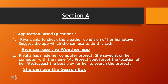Rhea wants to check the weather condition of her home town — suggest the app she can use. The answer is: Rhea can use the Weather app. Next, Kritika has made her computer project and saved it with the name 'my project' but forgot the location of her file. The best way to search for it is to use the search box, also known as the search tool Cortana, through which we can search any file or folder on the computer as well as on the web.